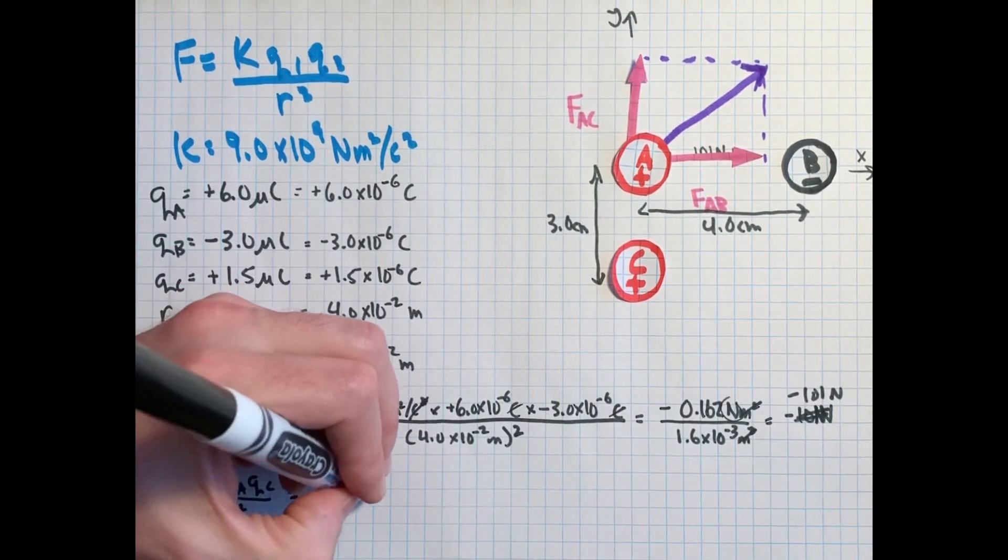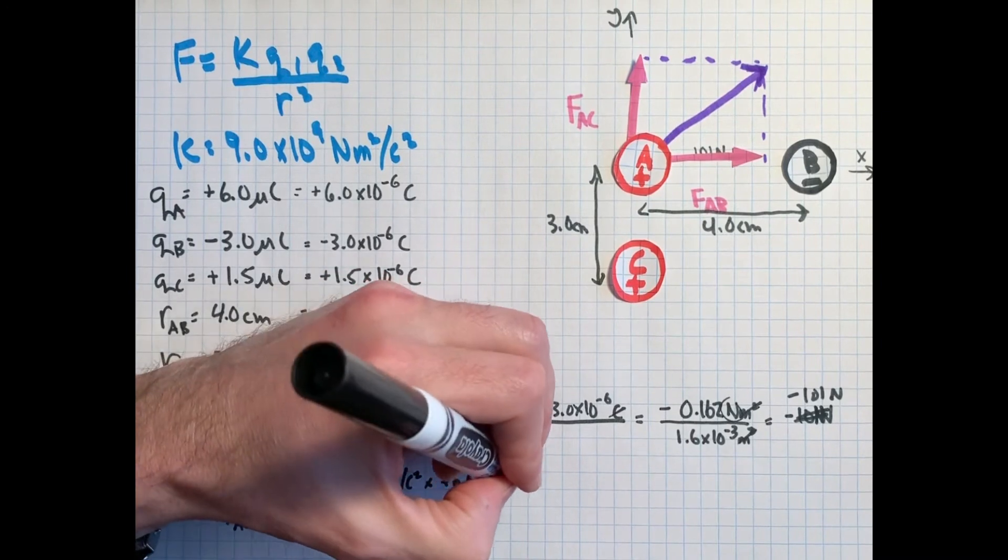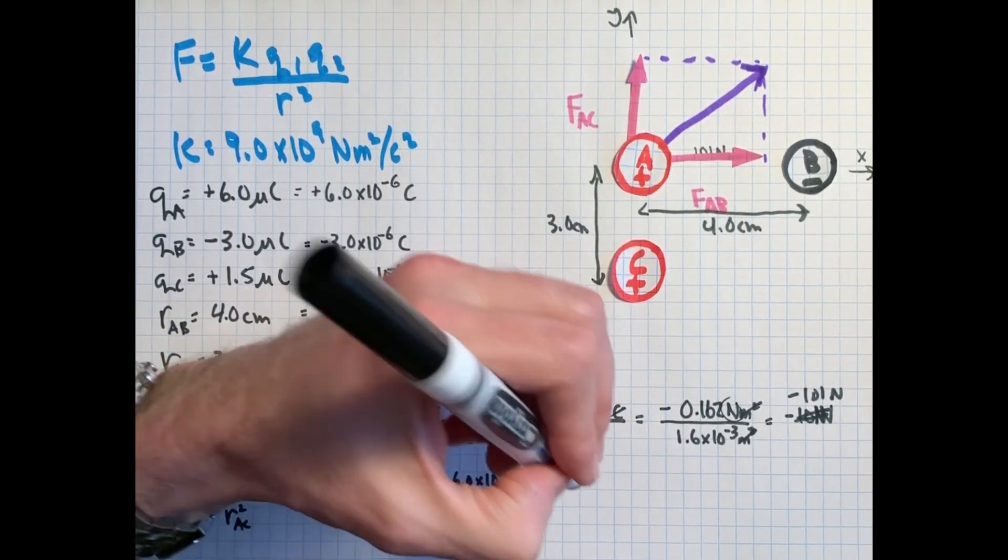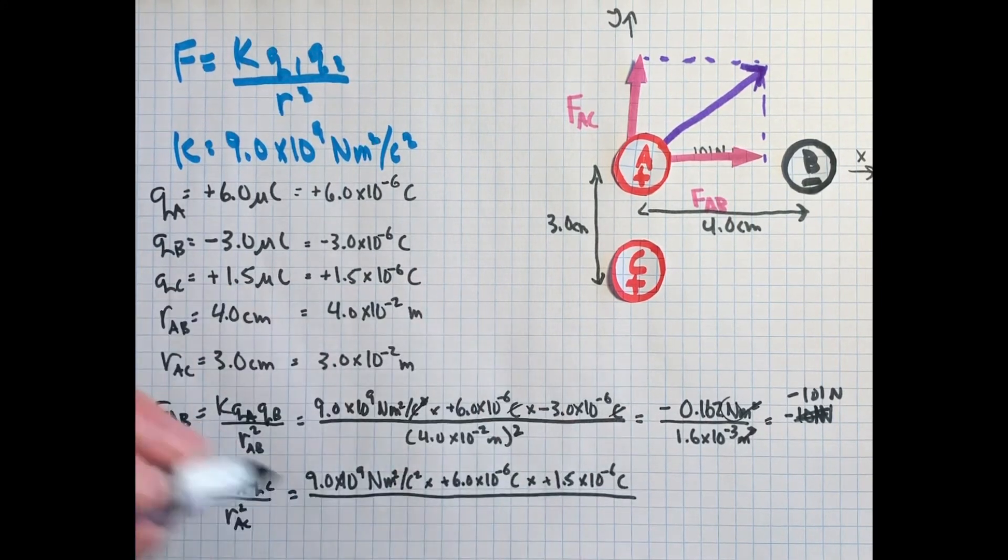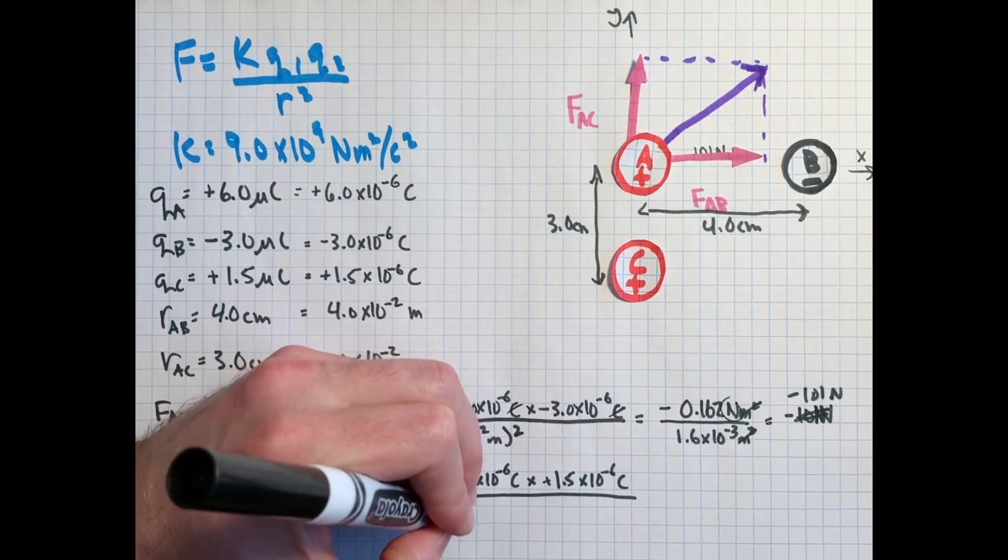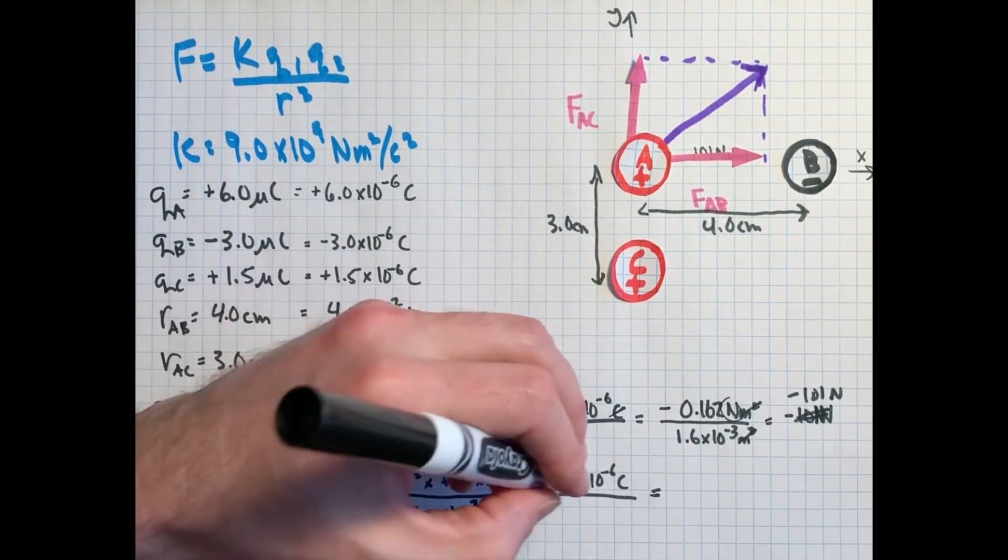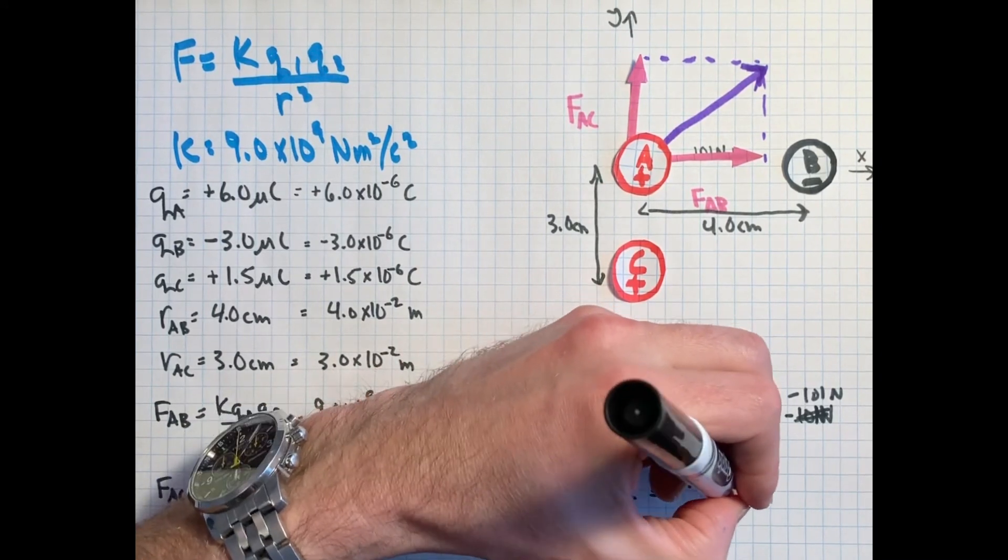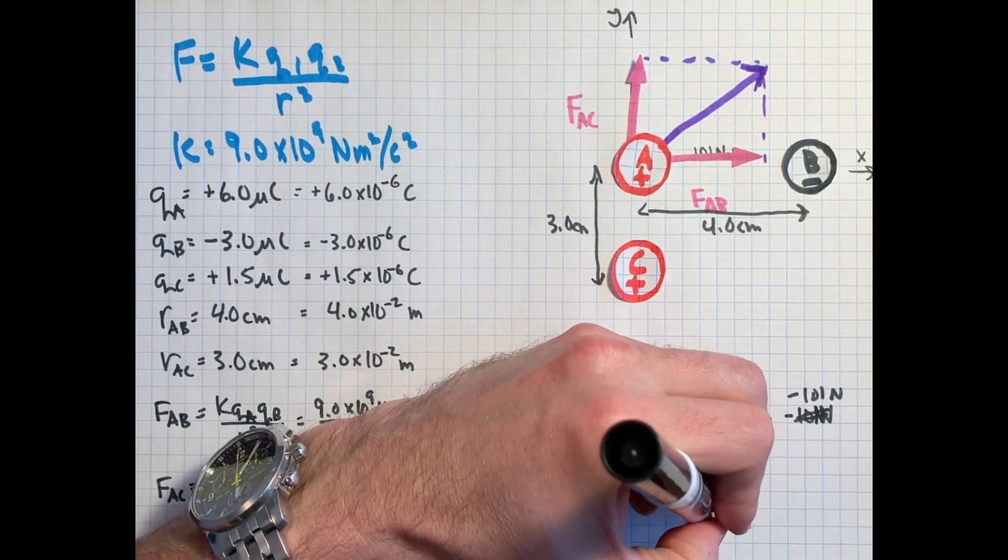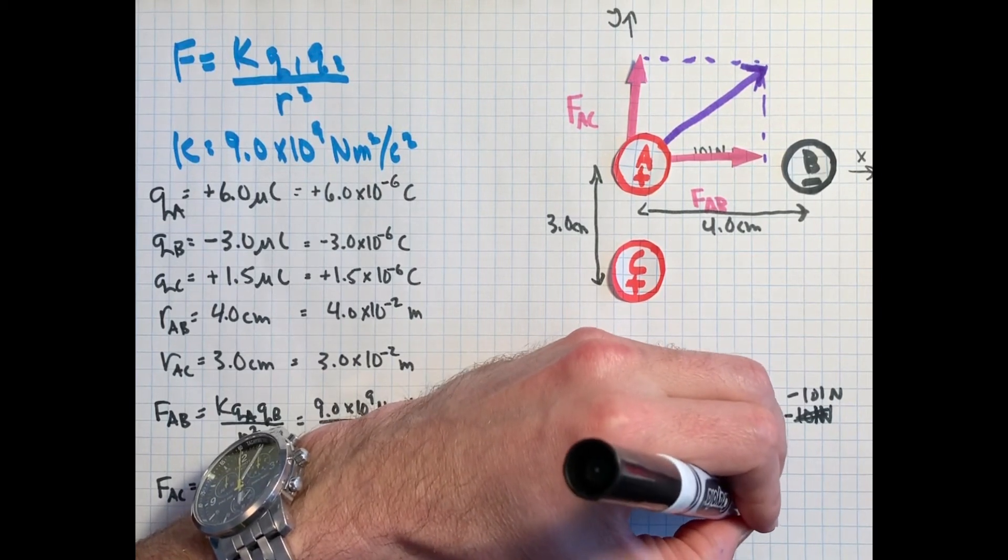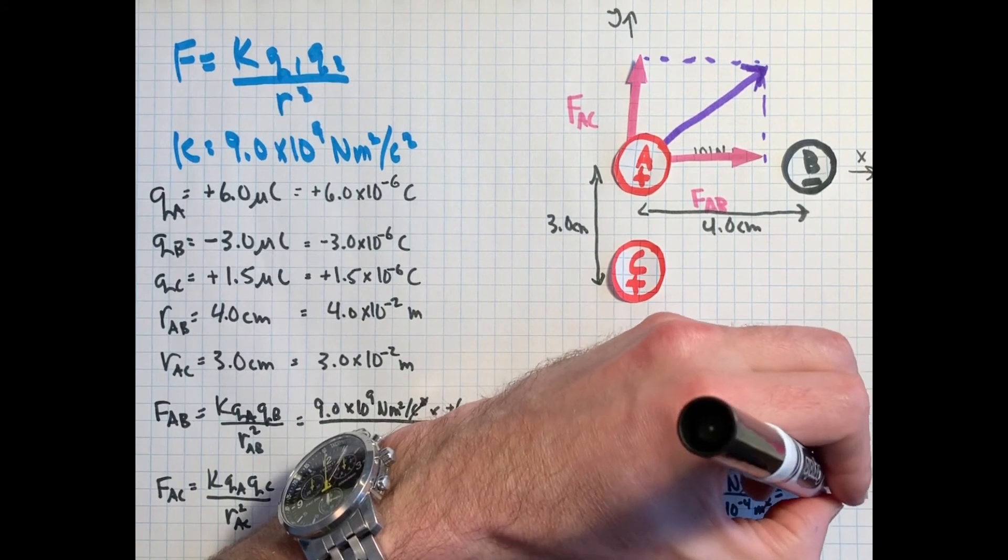So 9.0 times 10 to the 9 newton meters squared coulombs squared times plus 6 times 10 to the minus 6 coulombs times, in this case, positive 1.5 times 10 to the minus 6 coulombs, and all over now, not 4, but 3 times 10 to the minus 2 meters, and we'll square all that. So same idea with the units cancelling. We get on top, this times this times this gives me 0.081 newton meters squared, and 3.0 times 10 to the minus 2 squared is 9.0 times 10 to the minus 4 meters squared. Cancel, cancel. And we're left with a positive number now, but remember positive just means repulsive of 90 newtons.